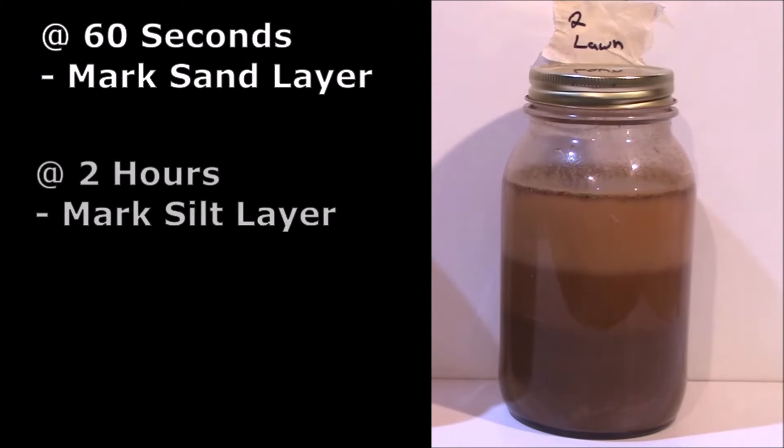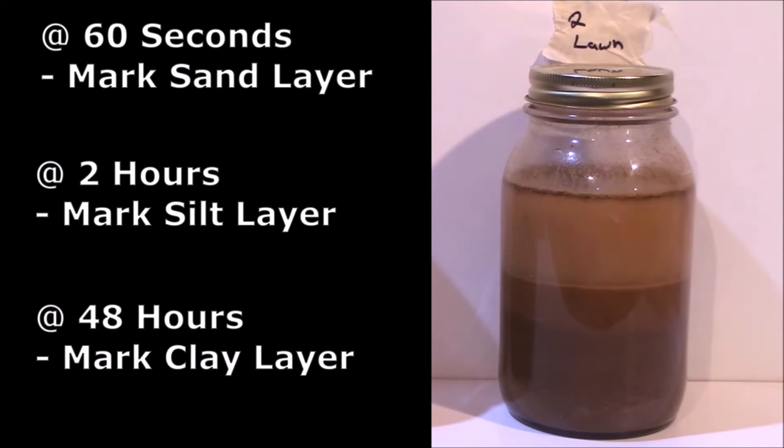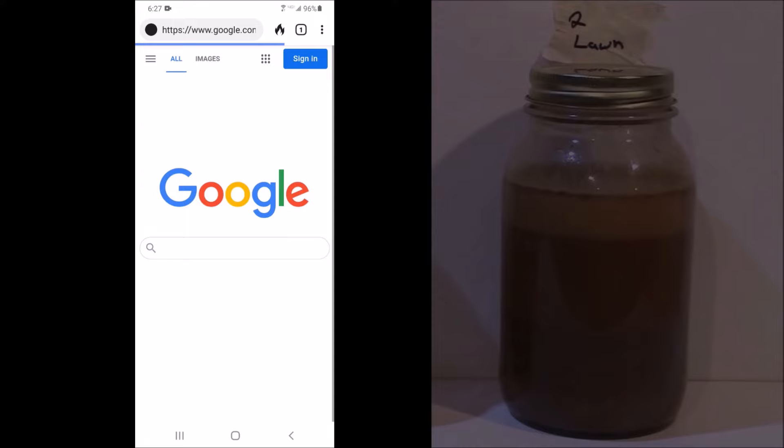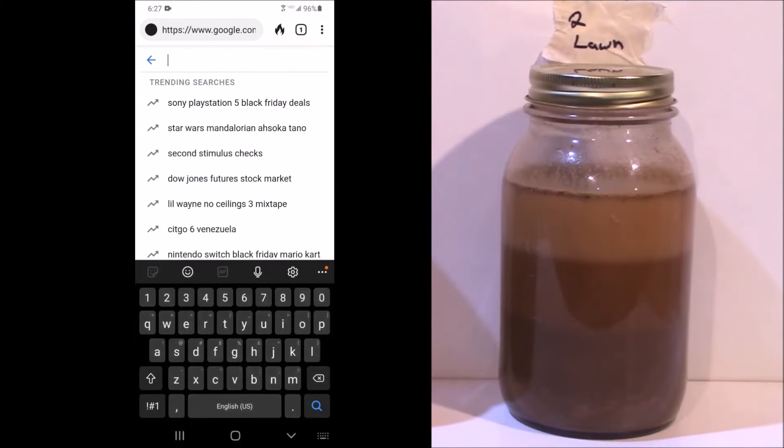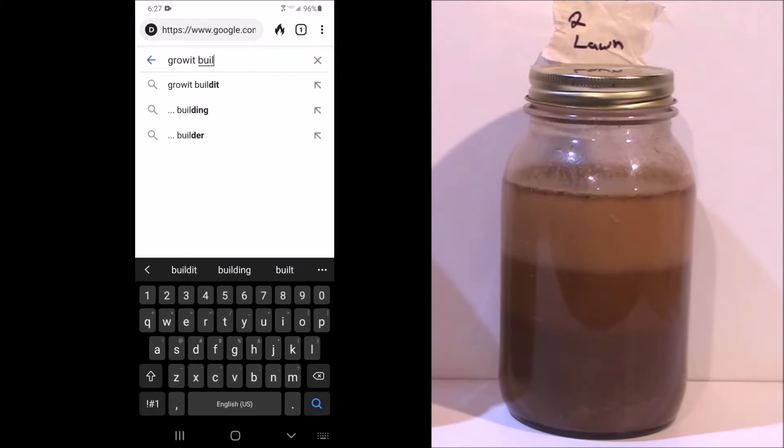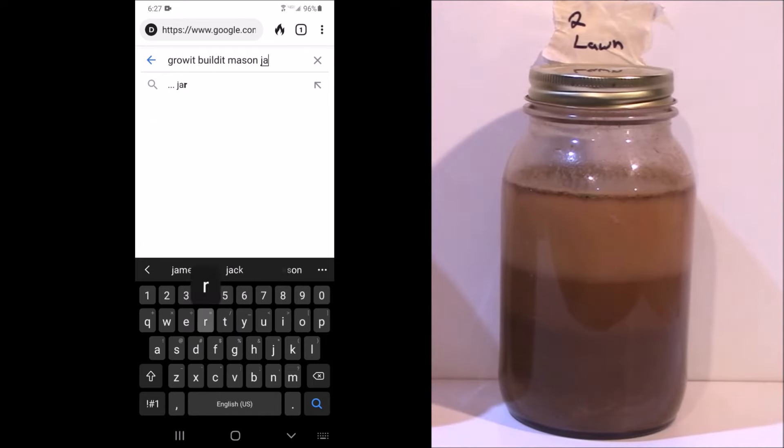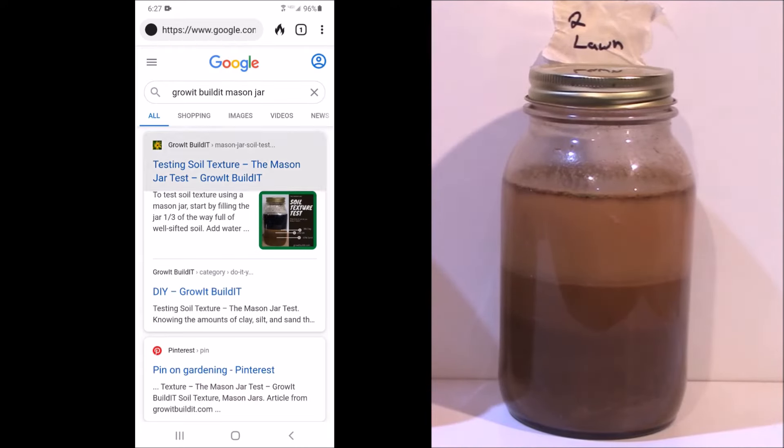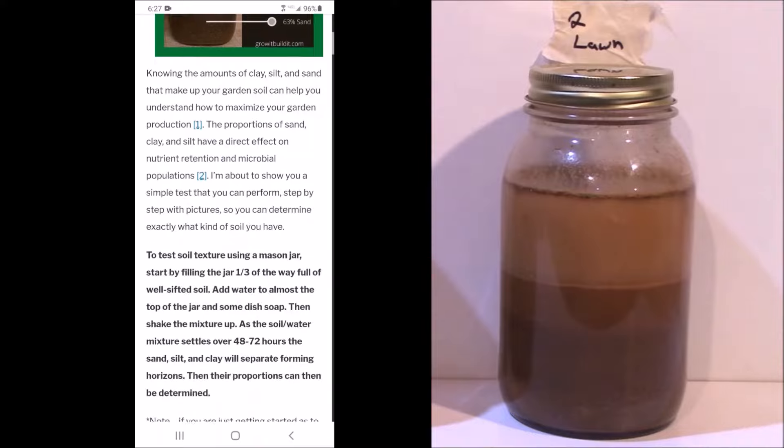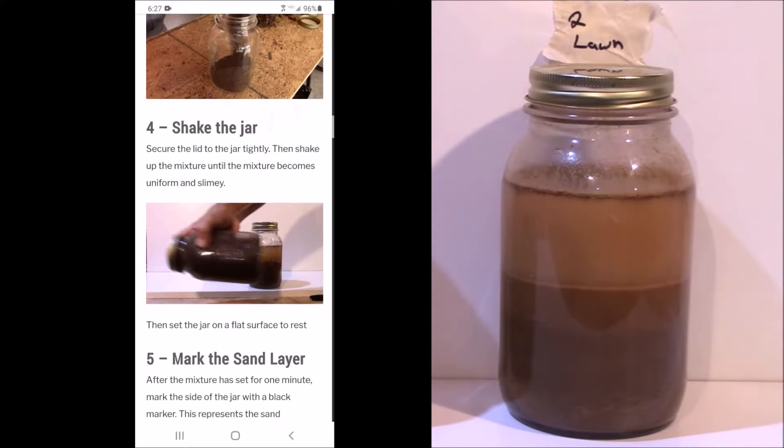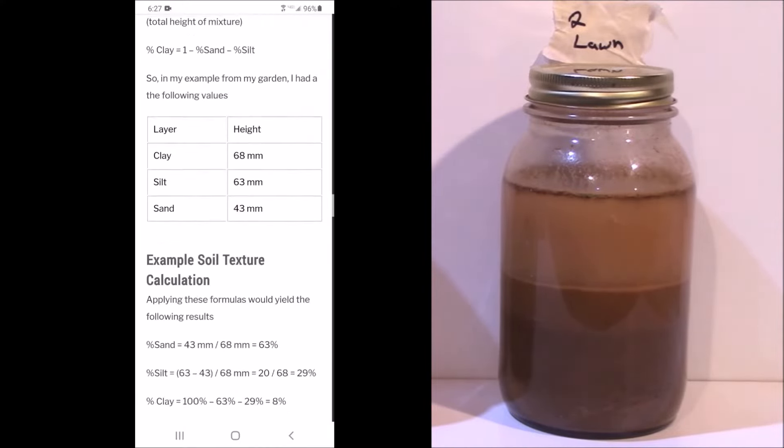At 60 seconds, take your marker and mark the sand layer. At two hours, mark the silt layer. Roughly two days later, you can mark the clay layer. It could take more than two days—I've had it take about three or four days. If you just want a quick reference, Google "grow it build it mason jar soil test" and you'll get to our article.